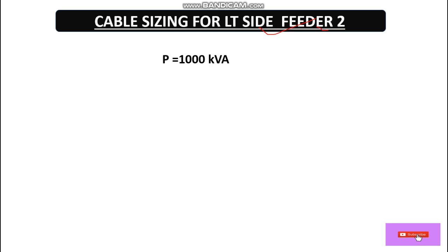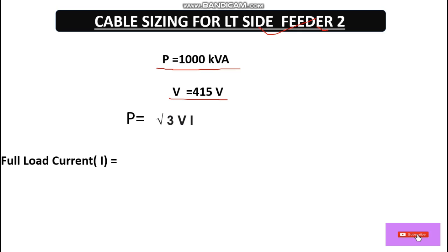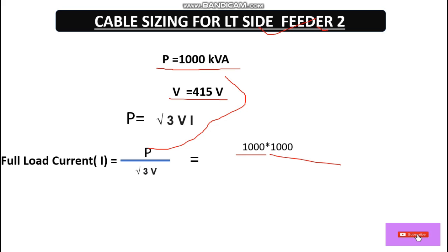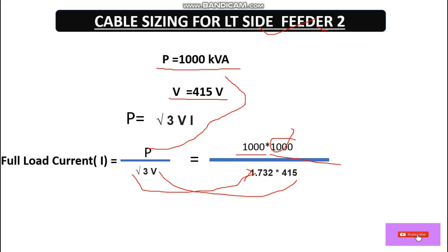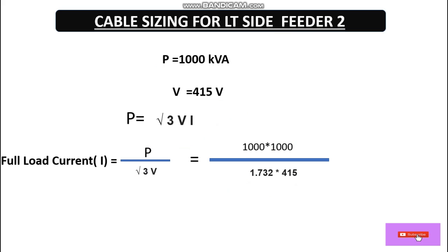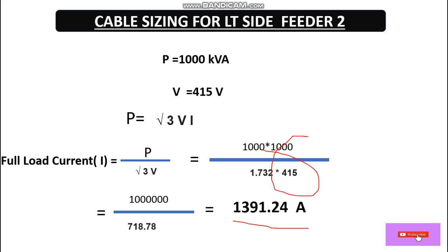Here we are calculating cable size for the LT side feeder two. We have an apparent power of 1000 KVA and voltage of 415 V. The apparent power formula is: S = √3 × V × I. So the full load current I = P / (√3 × V) = 1,000,000 / (1.732 × 415) = 1391.24 ampere. This is the full load current for this feeder.